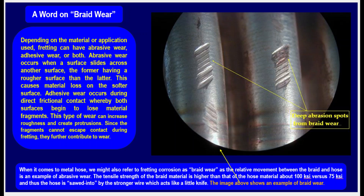When it comes to metal hose, we might also refer to fretting corrosion as braid wear, as the relative movement between the braid and the hose is an example of abrasive wear. The tensile strength of the braid material is higher than that of the hose material — about 1000 KSI vs. 75 KSI — thus the hose is sawed into by the stronger wire, which acts like a little knife. The image above shows an example of braid wear with deep abrasion spots.